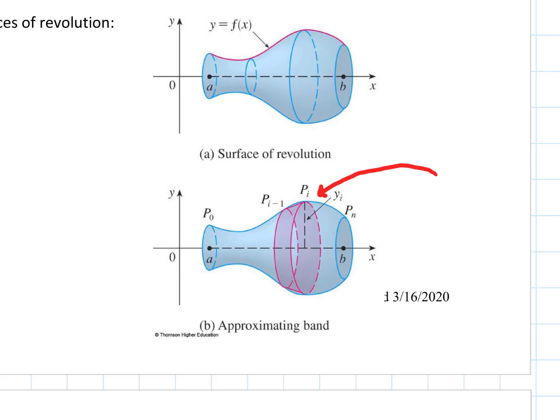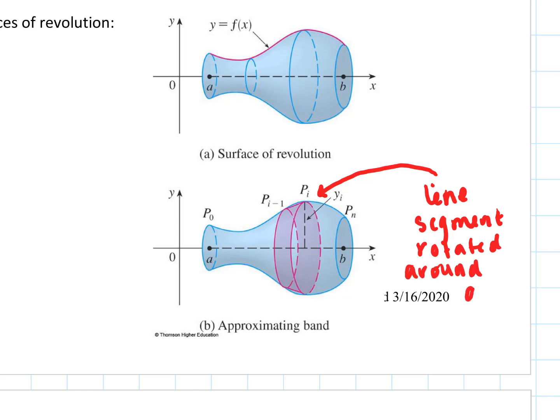Essentially what we're going to take is a line segment and rotate it around — so we take a line segment and rotate it around the axis of revolution. That creates this band of surface area. Once we figure out how to write up each of these bands, we add them all up and then let the actual width of those bands go to zero with a limit.